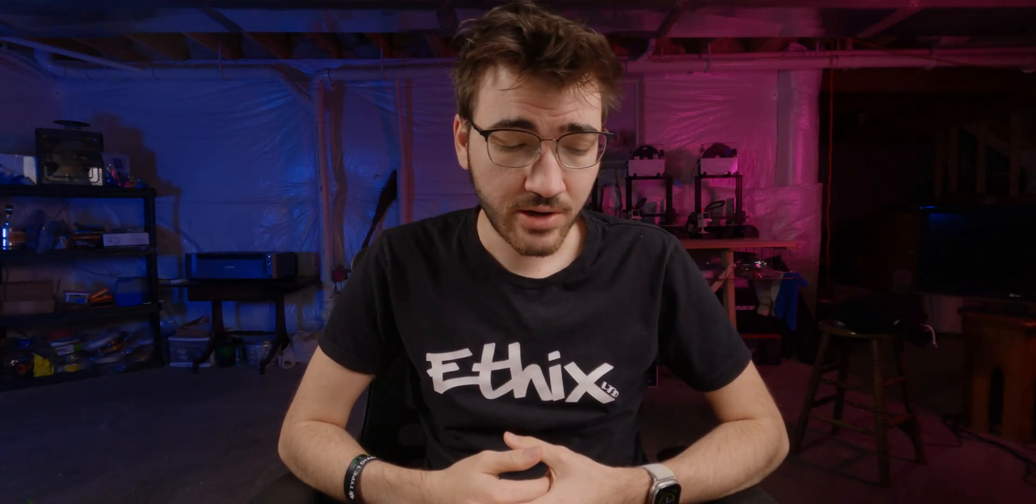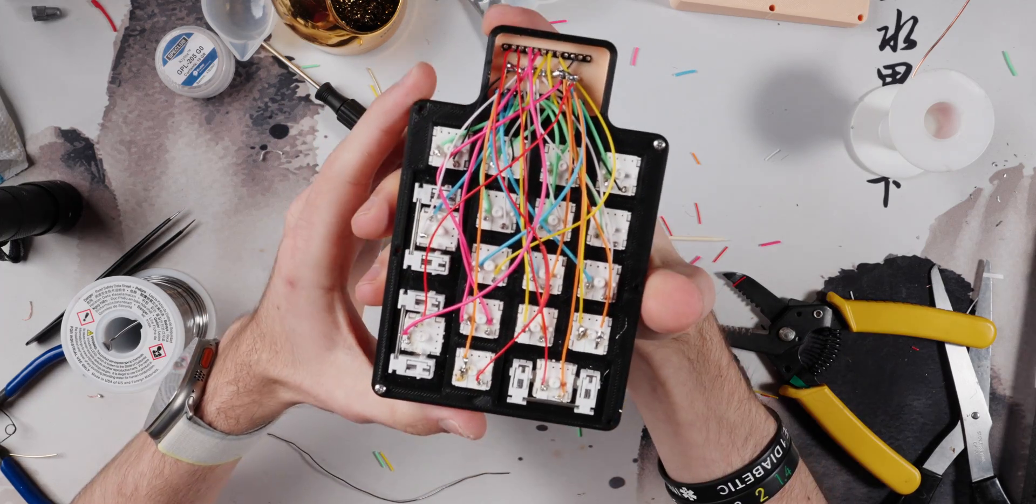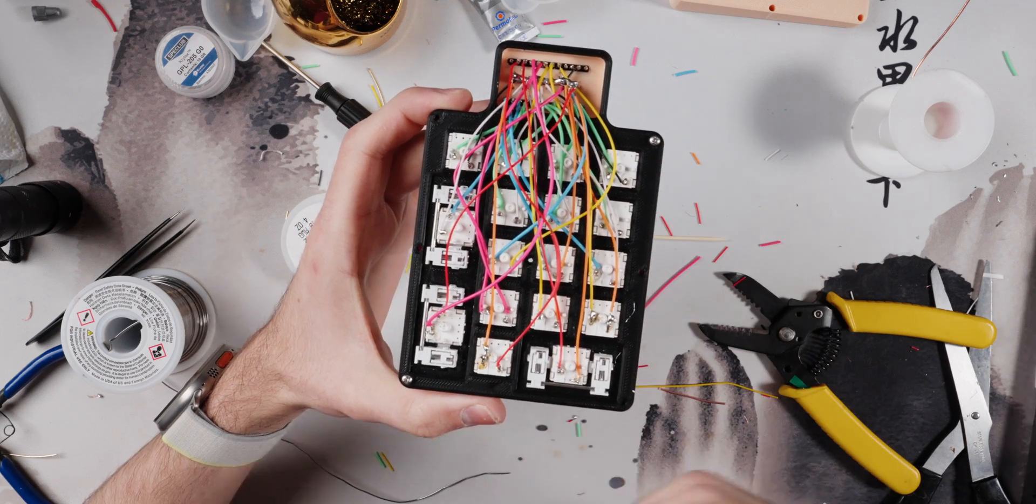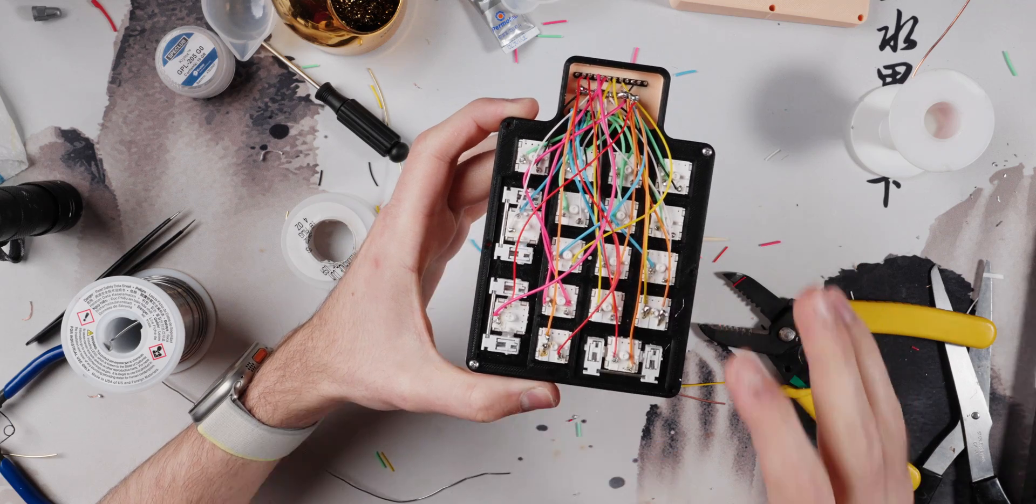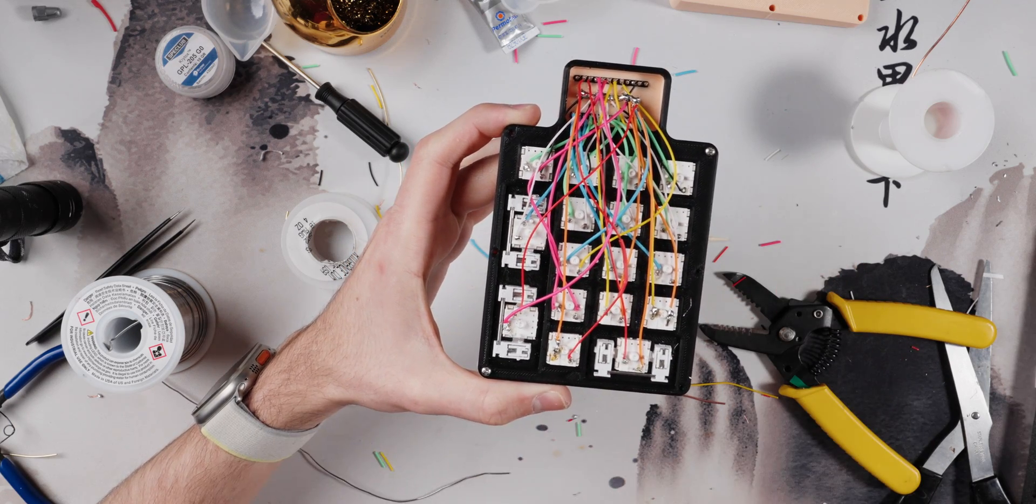And this here is the aftermath of two hours of hand wiring, and here it is completely done. So you're probably noticing something - there's a lot of cables here. Obviously it's a hand-wired direct board.